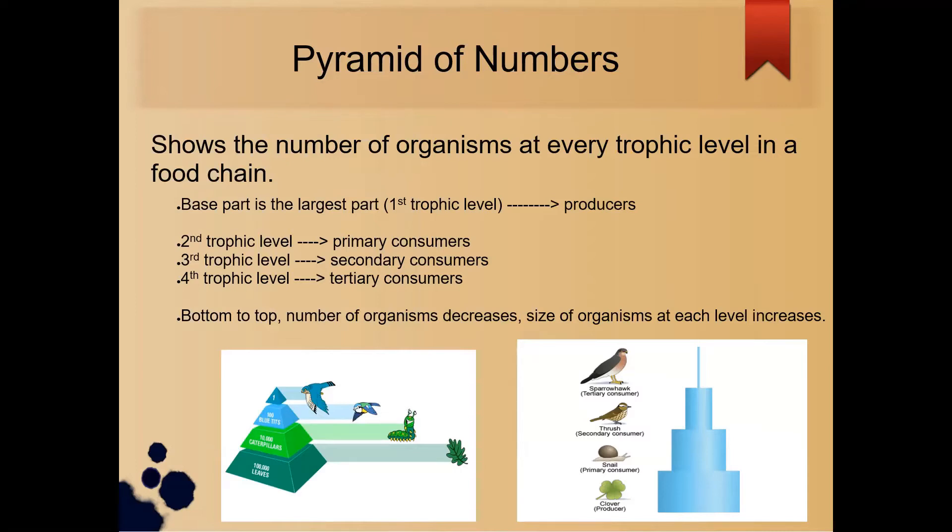we call as primary consumer, the third trophic level we call as secondary consumer, and the fourth trophic level we call as tertiary consumer. From bottom to top, number of organisms will decrease and the size of organism at each level will increase.